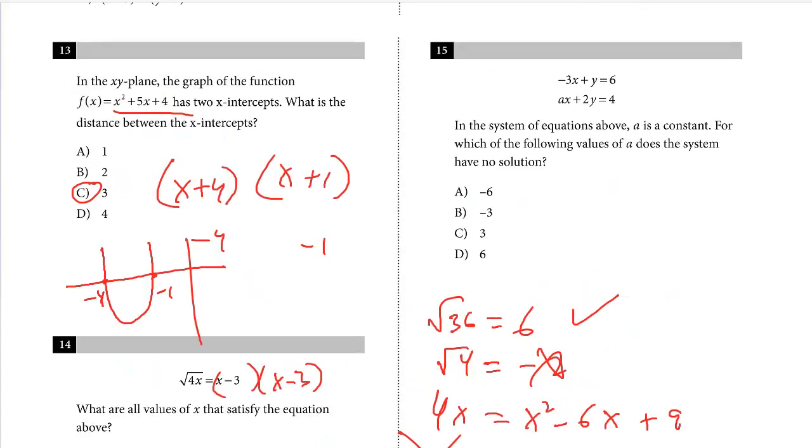Let's do the last question on this page. Number 15. In the system of equations above, A is a constant. For which of the following values does A, does the system have no solution? This is a pretty common question. Not too difficult for number 15. No solution. What types of lines have no solution?